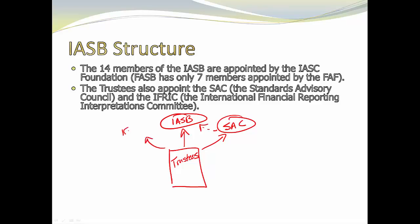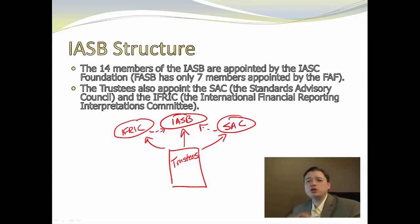They also created what we lovingly call the IFRIC. The IFRIC also sets IFRS. The IFRIC's job is kind of like the EITF under US GAAP. The EITF was designed to do a quick draft of a standard, and everybody follows that rule until FASB comes up with their rule. The IFRIC does a very similar thing for IASB. The difference is the IFRIC sets a rule and sends it to IASB, and IASB votes on whether it'll work. US GAAP doesn't have that — once the EITF votes, it's good to go. So IASB has kept that final say in setting standards, even on quick rules.